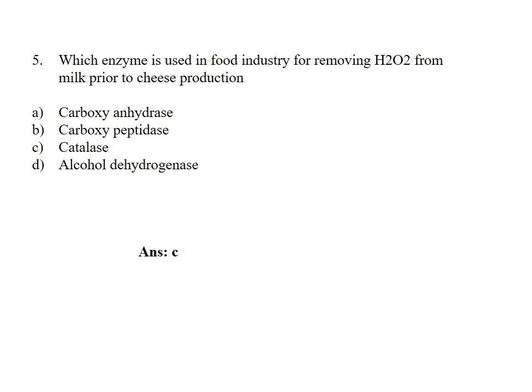Which enzyme is used in food industry for removing hydrogen peroxide from milk prior to cheese production? Option A, Carboxyanhydrase; B, Carboxypeptidase; C, Catalase; D, Alcohol dehydrogenase. Answer Option C, Catalase.